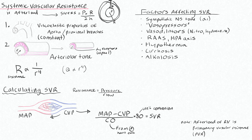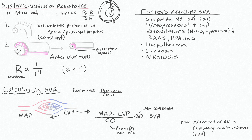There are a number of factors that affect SVR. Sympathetic nervous system tone via alpha-1 receptors on smooth muscle is the usual regulator. Vasopressor medications increase SVR through alpha-1 receptors. Vasodilators such as nitroglycerin and hydralazine decrease SVR. Activation of the renin-angiotensin-aldosterone system and the HPA axis increases SVR, which is why ACE inhibitors lower blood pressure. Hypothermia increases SVR. Patients with cirrhosis have low systemic vascular resistance. Alkalosis increases SVR.